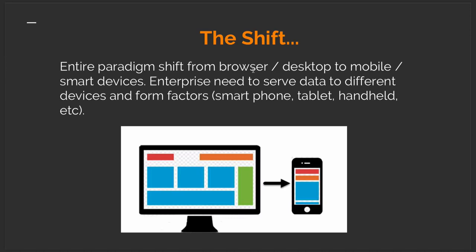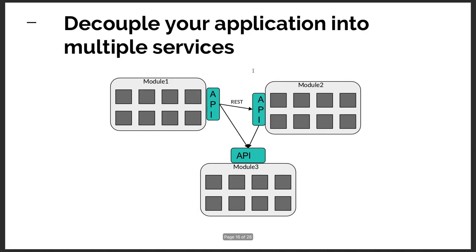We are shifting the entire paradigm from monolith to microservices because applications are growing. This is the evolution that happened in the last decade — dividing the monolith into microservices where modules can be independent, talking to one another through REST, RPC, gRPC, or a publisher-subscriber mechanism. You just need to define a communication mechanism that reduces coupling between modules.